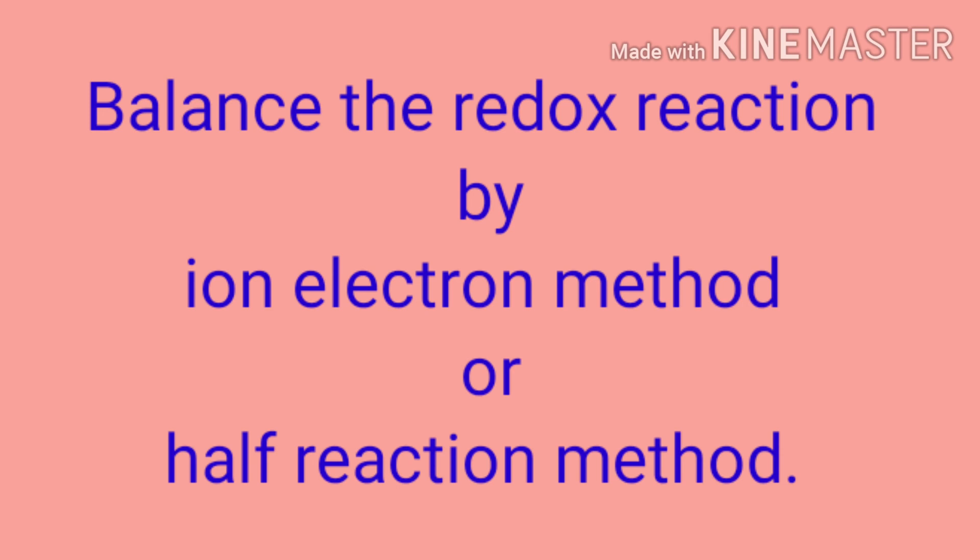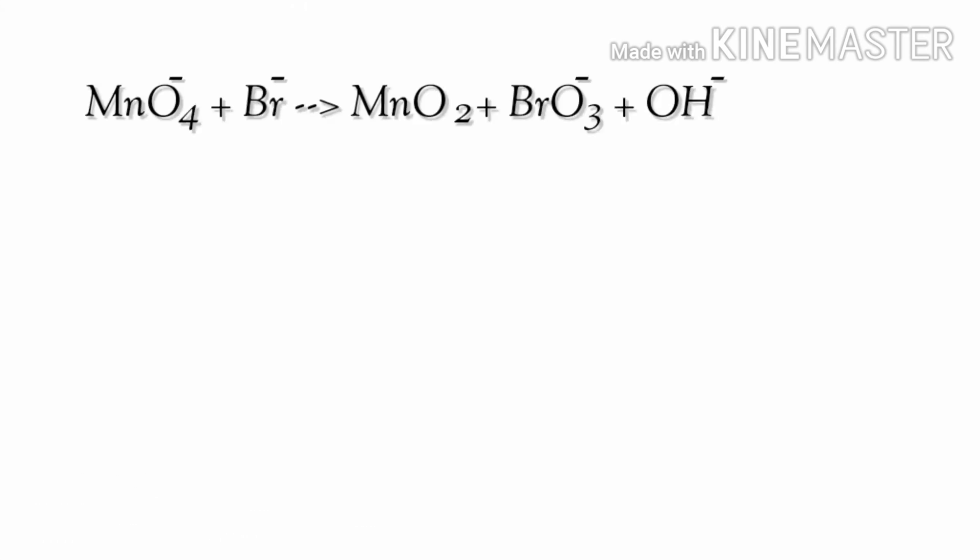Balance the redox reaction by ion electron method or half reaction method. Let's take a look at this equation representing a chemical reaction. Figure the reducing and oxidizing agents by the rules of assigning oxidation numbers.